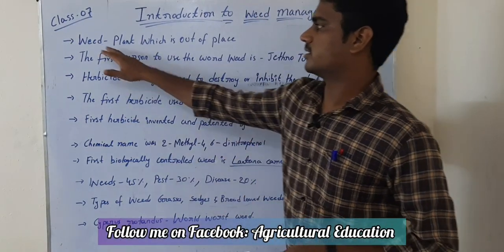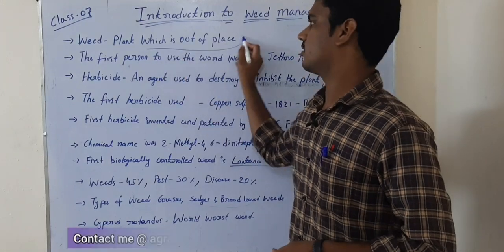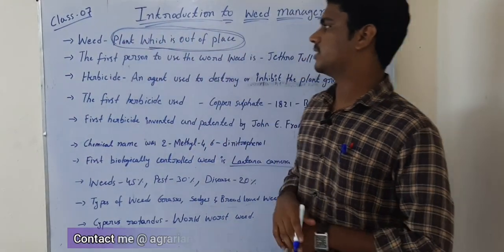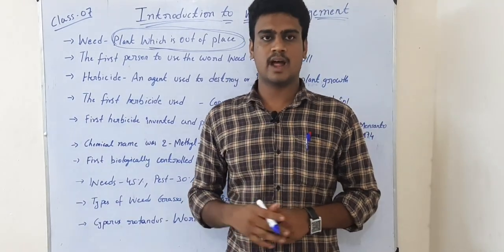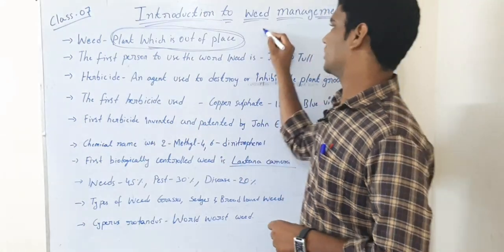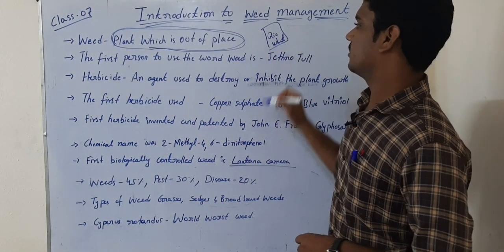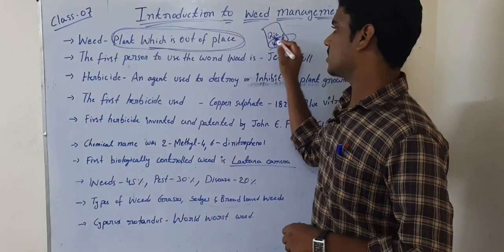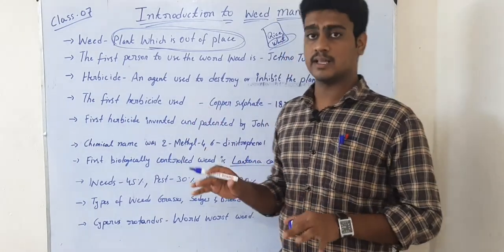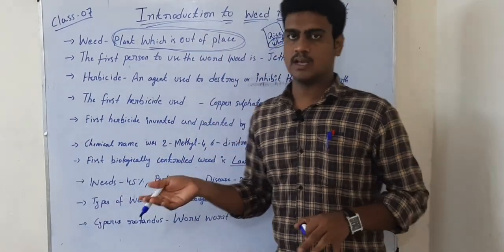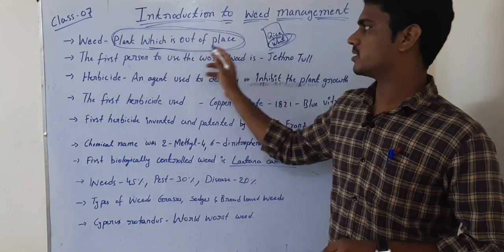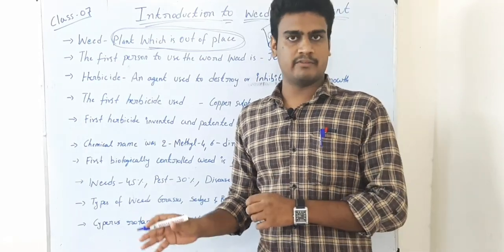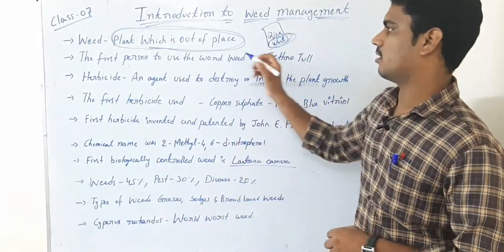The first topic is defining weed. A weed is nothing but a plant which is out of place. There are many definitions related to weed, but the most common and simple definition is 'plant which is out of place.' Some people say unwanted plant or undesirable plant, but consider this: if you are raising a rice crop and a wheat plant appears, we cannot say wheat is an unwanted plant — it is a useful plant, but it is out of place. That's why a weed is defined as a plant which is out of place.